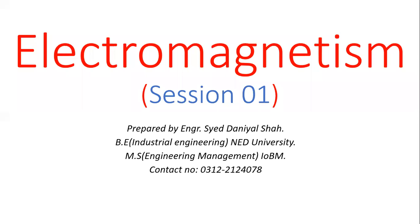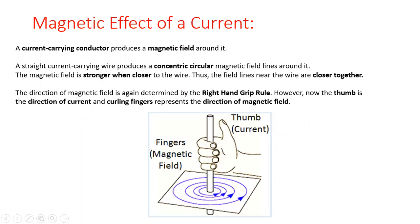In this chapter on electromagnetism, we are going to study the relationship of electricity with magnetism, and how an electric current produces a magnetic effect. The very first topic we discuss is the magnetic effect of a current. When a current is passing through a conductor, a magnetic field is produced around the conductor.